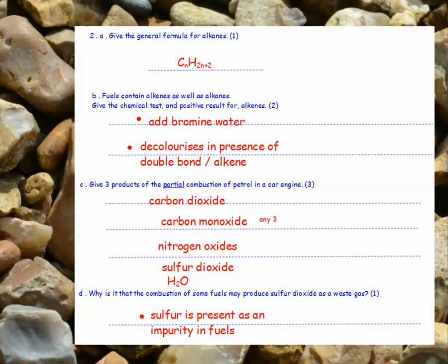The general formula for alkanes is CnH(2n+2). The chemical test for alkenes is to add bromine water. The positive result is that it decolourises in the presence of the double bond, or the alkene.